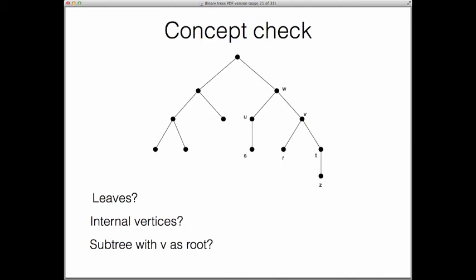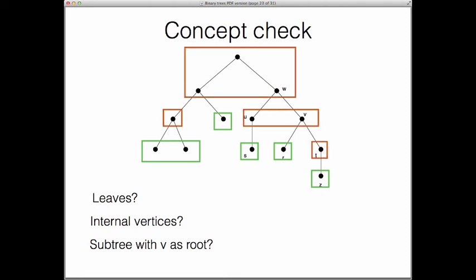So the leaves on the tree are these and I'll just circle them because they're not all labeled like I said. The internal vertices are all the others. Anything that's not a leaf is going to be an internal vertex. And here is the subtree that has V as its root.